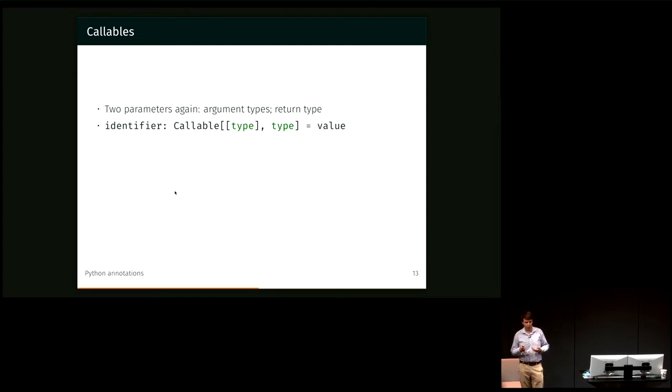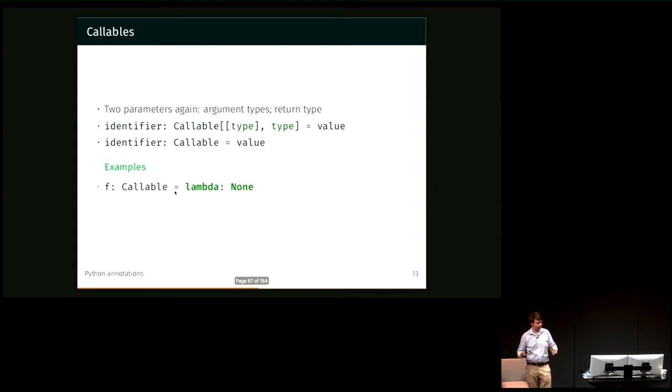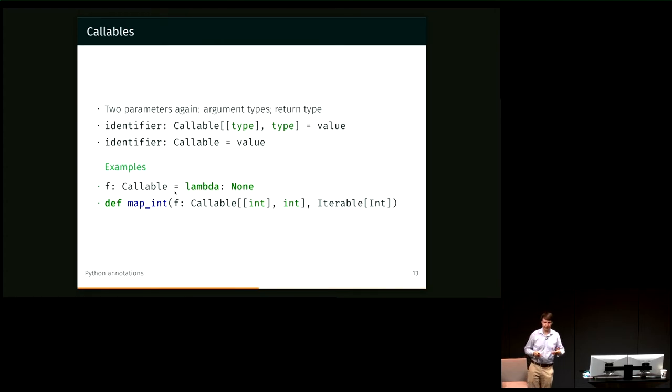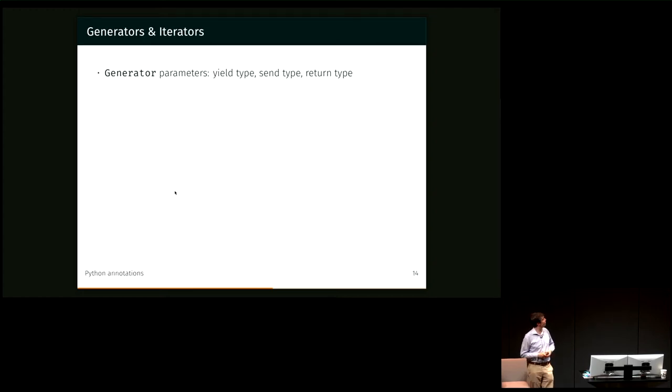We want to type something that's a callable. Then we have two things again, but the first one is actually a list in its own right. It's a list of the argument types. And then the second thing being the type that it returns. So we might have for example something that's a kind of not great re-implementation of map that just only works for integers. So we take something that's a callable from int to int and we return, in this case, an iterable of ints. That's not actually what map would, it doesn't matter, but never mind.